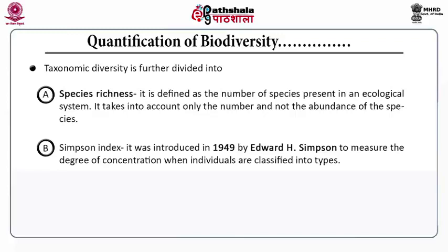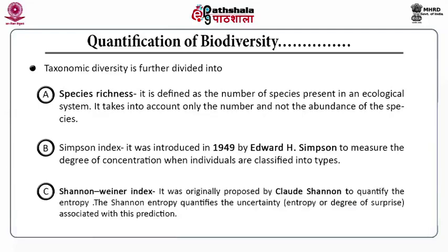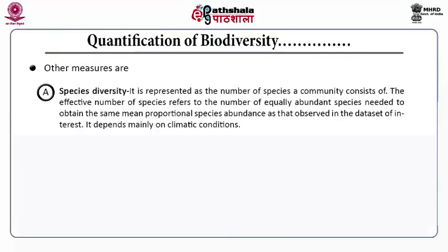Thereafter comes the Simpson index. This index was introduced in 1949 by Edward H. Simpson. It measures the degree of concentration. Thereafter comes the Shannon-Wiener index. It was originally proposed by Claude Shannon to quantify the entropy. Shannon entropy quantifies the uncertainty, entropy or degree of surprise associated with this prediction.